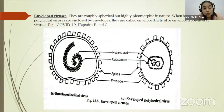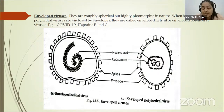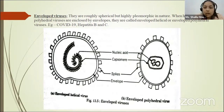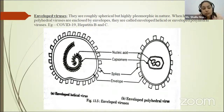The next type is enveloped virus. Enveloped viruses are roughly spherical but highly polymorphic in nature. Polymorphism is the existence of irregular and variant forms in the same species or strain of microorganisms. When helical or polyhedral viruses are enclosed by envelopes, they are called enveloped helical or enveloped polyhedral viruses. Examples are COVID-19, hepatitis B and C. The structure includes nucleic acid, capsomers, spikes, and an envelope.